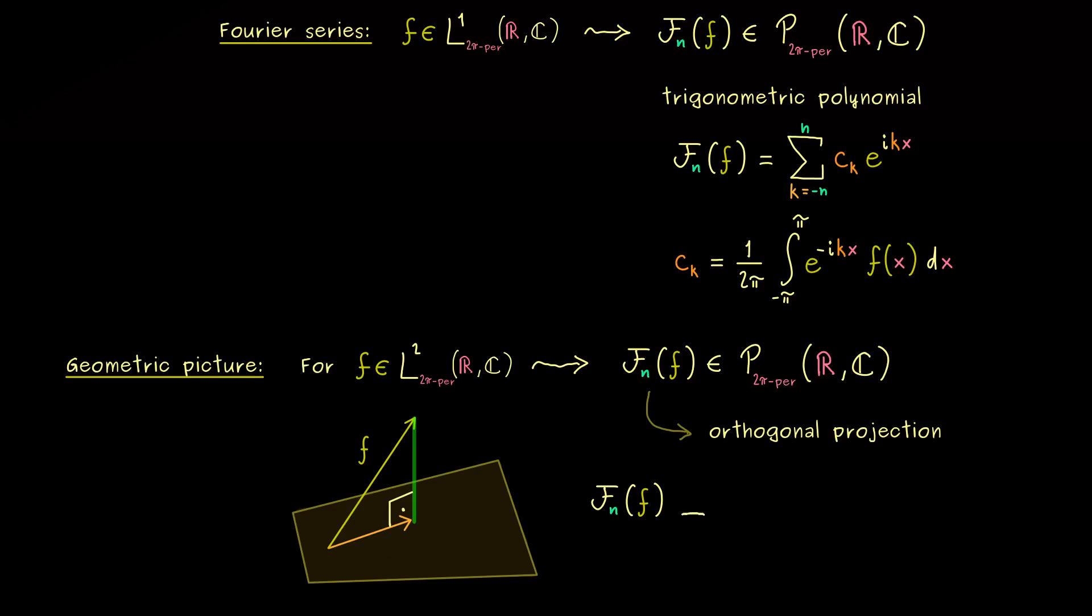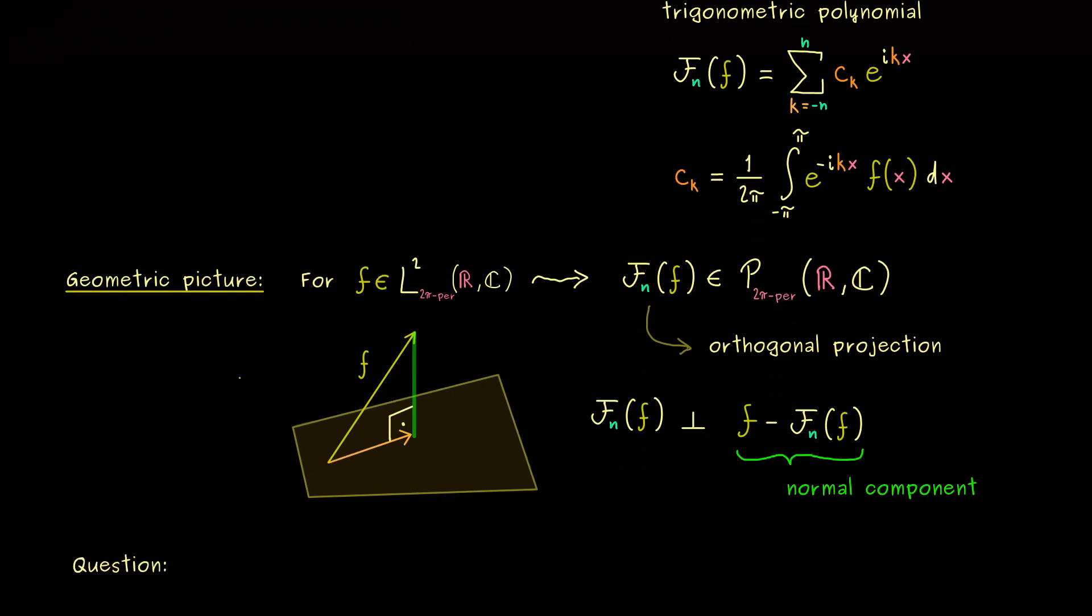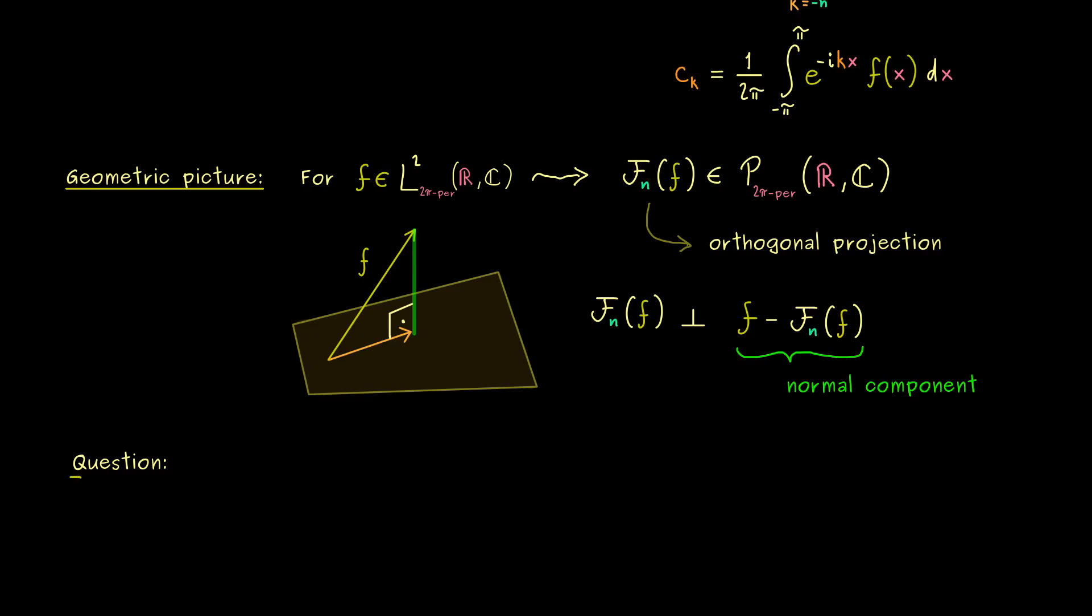Here we just have the orthogonal projection and the normal component, and by definition both are orthogonal to each other with respect to the inner product in L². So we can just write it down: f_n of f is orthogonal to the normal component, and the normal component is simply f minus the orthogonal projection. So there's no need to introduce a new name—obviously the difference is exactly what we need here. Ok, now this is something important to keep in mind, but back to the Fourier series now. An important question for the L¹ case as for the L² case is obviously what happens in the limit n to infinity.